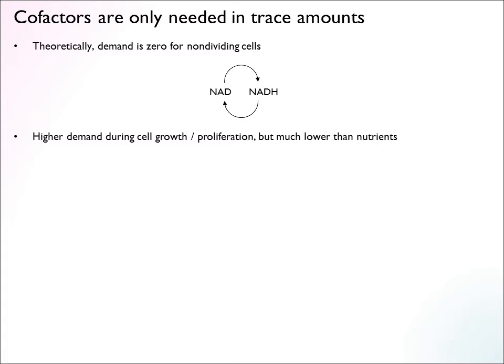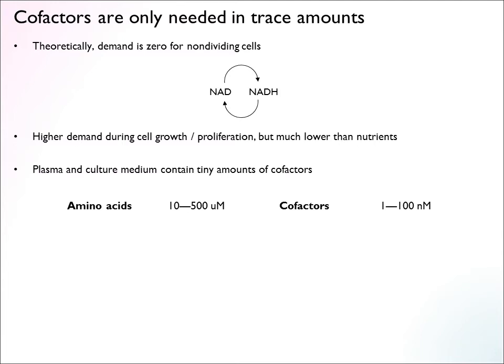Cofactor requirements are much lower than other nutrients like glucose and amino acids, which are used in large amounts. You can see this by looking at concentrations in human plasma or typical cell culture medium formulations. Compared to the levels of amino acids, cofactors are present in tiny amounts — typically a couple of orders of magnitude, maybe three orders of magnitude lower than amino acids, and even lower than glucose. This makes sense because cofactors are regenerated all the time.